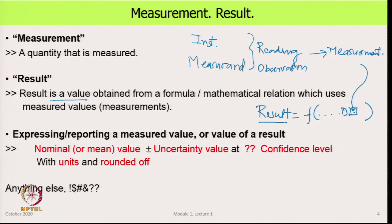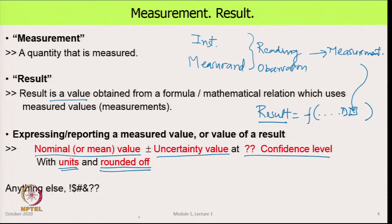Then we have a formula where the result is some function of various things, of which one or more measurements are parts, and using this calculation we get another number which we call the result. The key idea of this course is that whether it is a measurement or a result, we report it as a nominal or mean value plus or minus an uncertainty at a particular confidence level, always specifying units and rounding to a particular number of significant places.